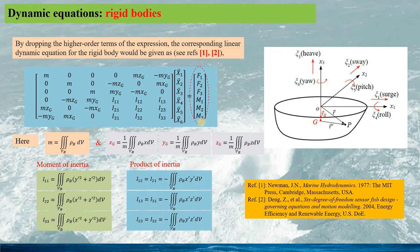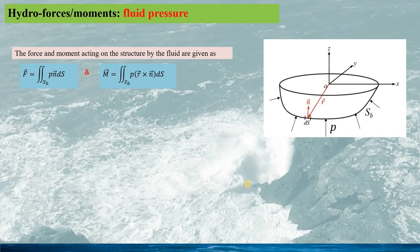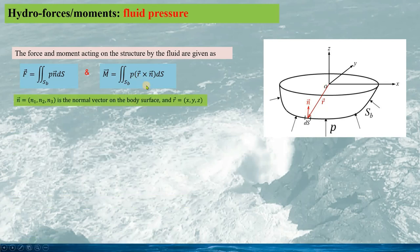For solving the dynamics of the wave energy converter, the most important thing is how we can calculate the force and the moment. For wave-structure interactions, it is well known that the forces and moments acting on the structures can be calculated as the pressure integrals on the wet surface Sb, given as these formulas for the force vector F and the moment vector M respectively. Here P is the fluid pressure on the structure surfaces, vector N is the normal vector of the structure surfaces, and vector R is the vector from the reference point to the structure surface.